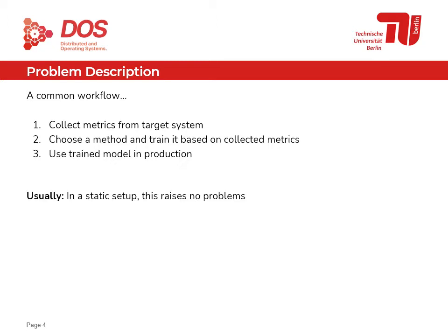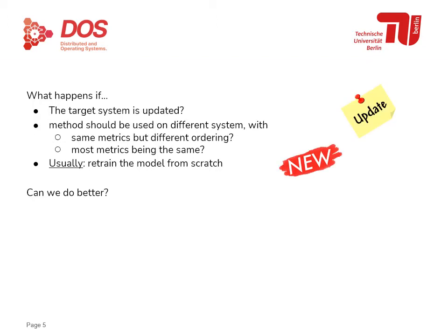In a static setup this raises no problems. However, what happens if the target system is updated, or the trained method should be used on a different system with either the same metrics in a different ordering, or most metrics being the same with a few additional ones? What usually needs to be done then is to retrain the model from scratch, which does not always seem very smart. So the question is: can we do better?